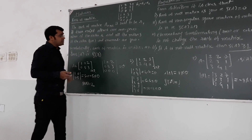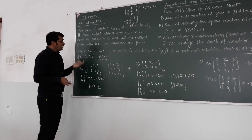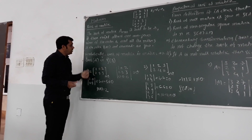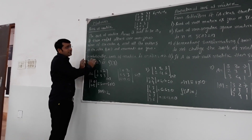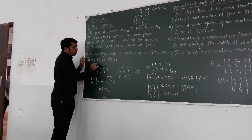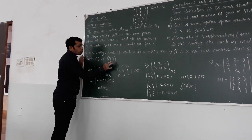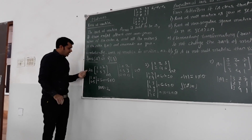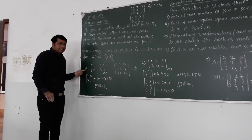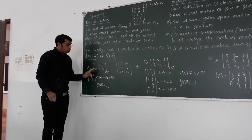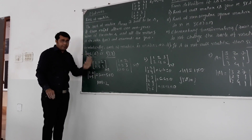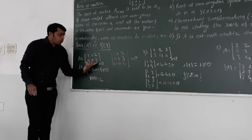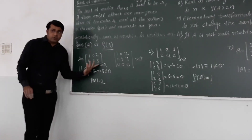Now what does it mean? We will see by example. Symbolically, the rank is denoted by rank of A or rho of A. Now I have taken a matrix A as: 1, 0, 2, 0, 5, 3. I will find out the minors for this.